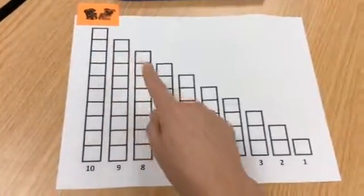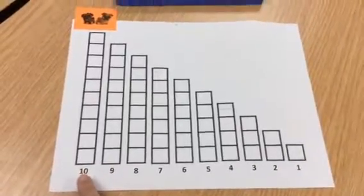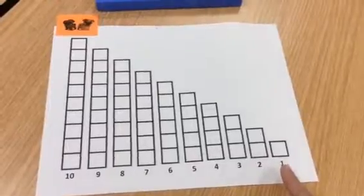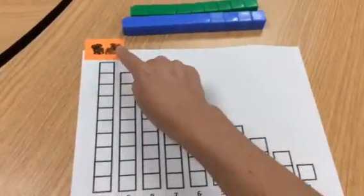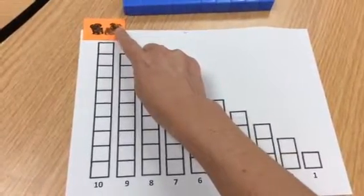Do you notice how the number stairs this time go down? The numbers start at ten and they're decreasing to one. So you're going to put Bingo and Rolly on ten and you're going to help them get down by saying your pattern.